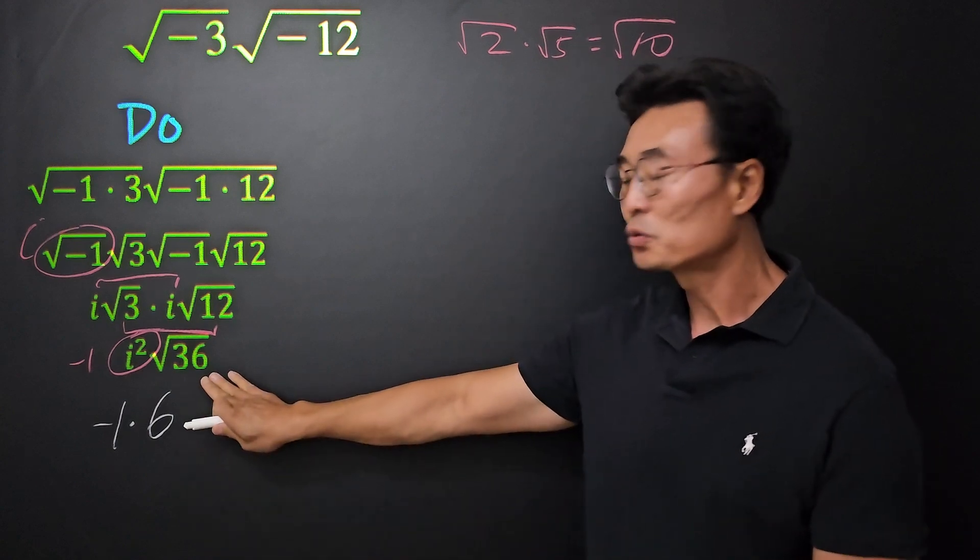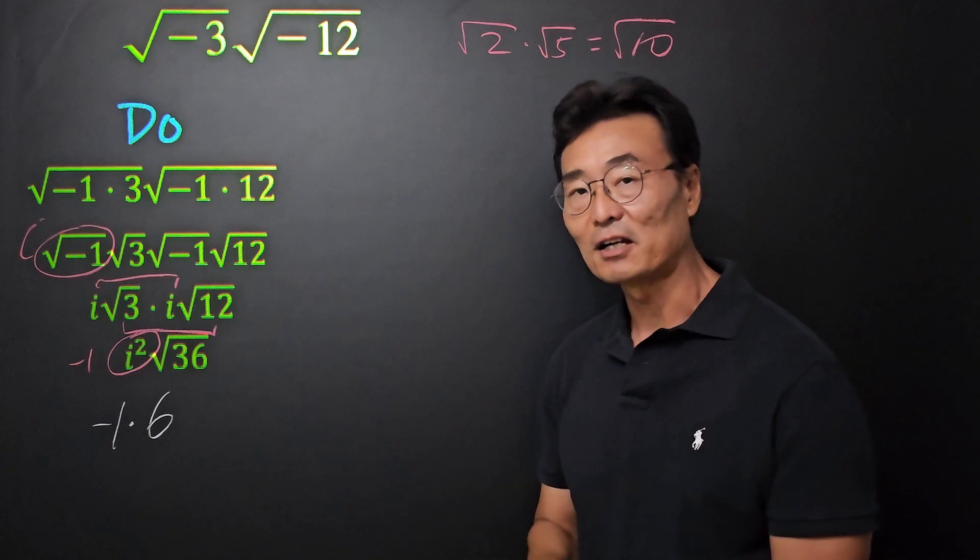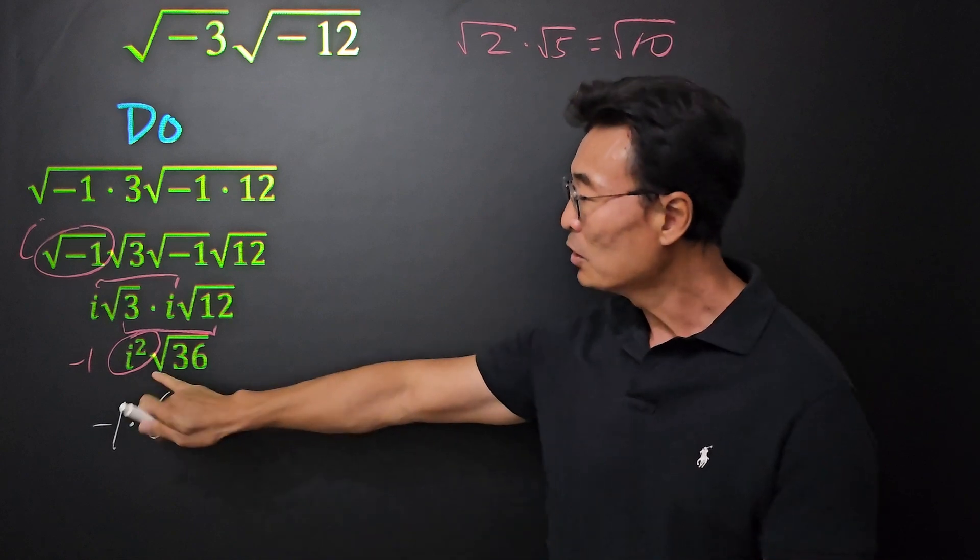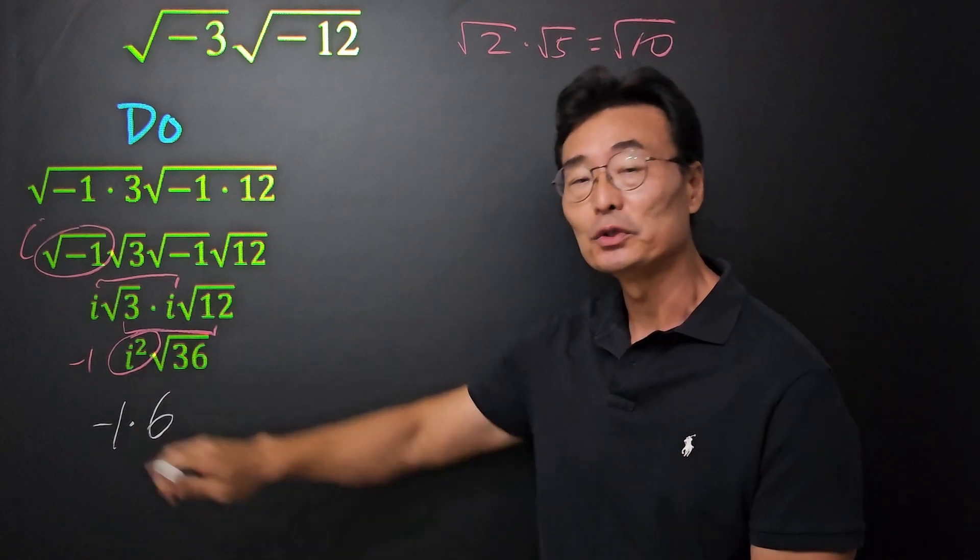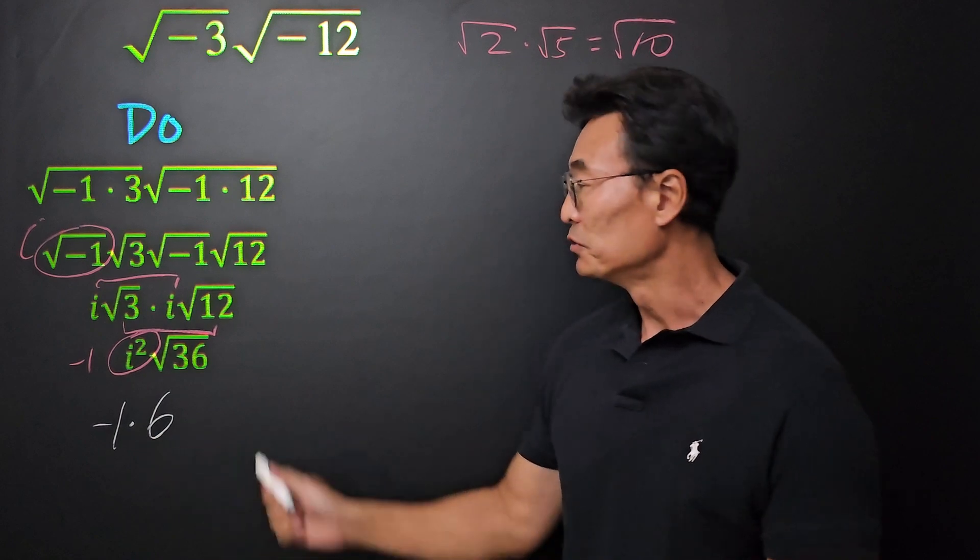Just to let you know, when we do square root 36, it's not plus minus 6, as a lot of people say. When we use this radical sign, we only use the principal root or the positive root.